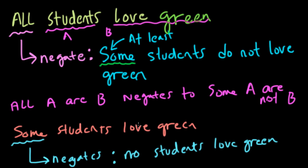Because here you're saying that if there are some students who love green, there must be some of them. Well, the opposite of that is saying no, there's no students that love green. So this negates a little bit differently. So some A are B, right?